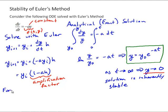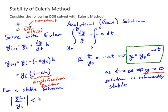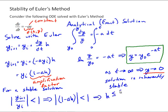For a stable solution, similar to the analytical solution, we want the absolute value of y_(i+1) over y_i to be decreasing — that is, less than 1. This tells us that the absolute value of the amplification factor (1 - a·h) should be less than 1. Solving for h, this gives us h ≤ 2/a as our criterion for a stable solution.